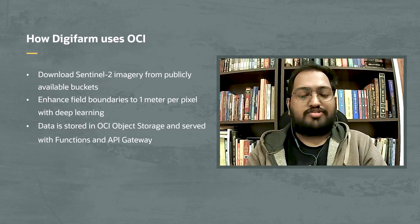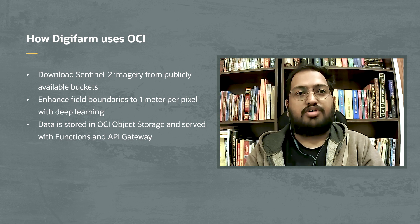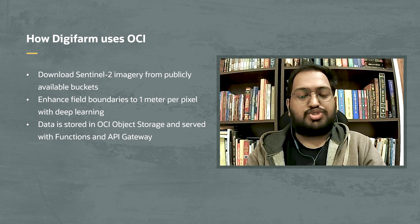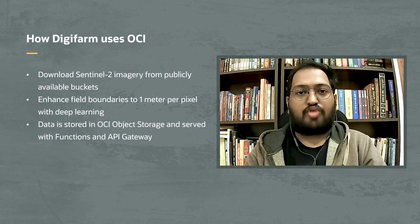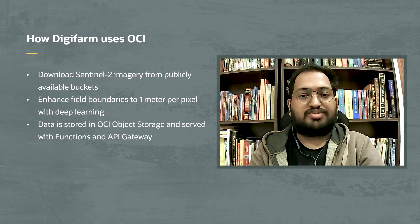We at Digifarm make use of publicly available Sentinel 2 imagery and process it further to get highly accurate deep result field boundaries, which we provide to other agriculture businesses. Our process starts by downloading the satellite imagery from the Sentinel 2 satellite missions, made available by the European Space Agency through their publicly available buckets. We take these images, which are of low resolution around 10 meters per pixel, and we have a proprietary machine learning process that enhances these low resolution images to one meter per pixel resolution.